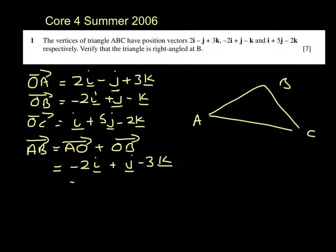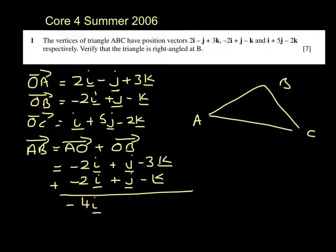And we want to add OB to that so minus 2i plus j minus k. I'm writing the i's, j's and k's in columns to make them easier to add. Minus 4i plus 2j minus 4k.